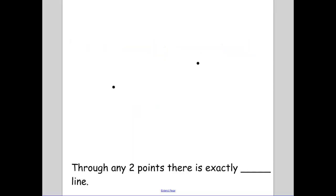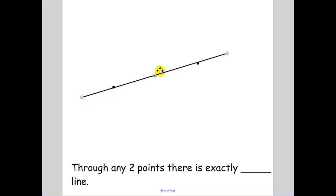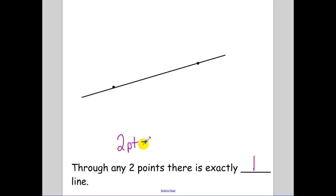One of our first postulates is: through any two points, how many lines can I draw? There's only one line that's going to go through both of those points. So through any two points, there's exactly one line. And that's a postulate. When we use these postulates in proofs, you're going to write out that through any two points there is exactly one line, or you can use the abbreviation: two points equals one line.